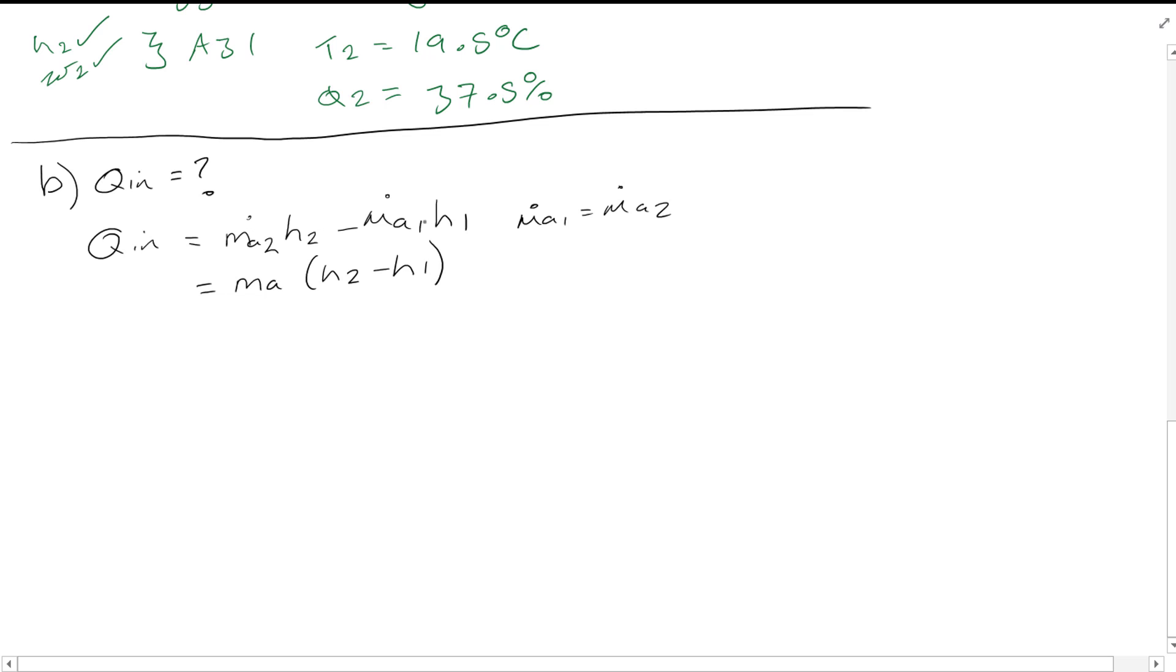If we find H1 we can find this because we've got two other values. We can use psychrometric chart A31 to find this. H2 we know from earlier on. So as long as we find Ma we can then easily find Q in.